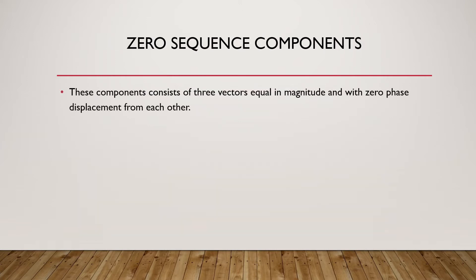Next, zero sequence components. The name itself indicates that the phase difference between each vector is zero. These components consist of three vectors equal in magnitude but with zero phase displacement from each other. So together we have positive sequence, negative sequence, and zero sequence components and their representations.